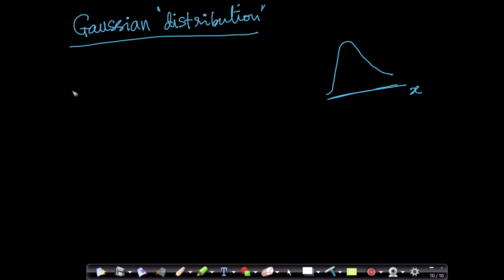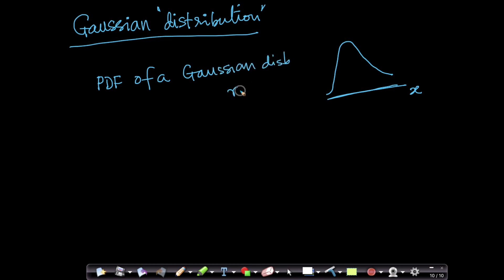The bell-shaped curve that you saw is nothing but the probability density function of a Gaussian distribution, of a Gaussian distributed random variable. So let us assume x is a continuous random variable. If x has a probability density function that looks like your bell-shaped curve, then we say x has a Gaussian distribution.